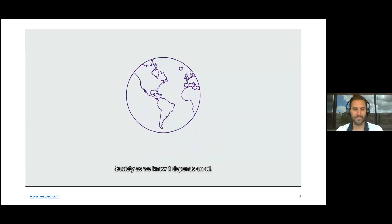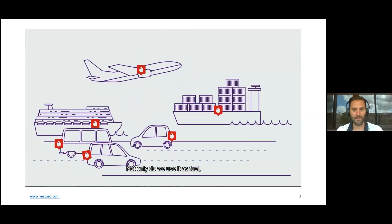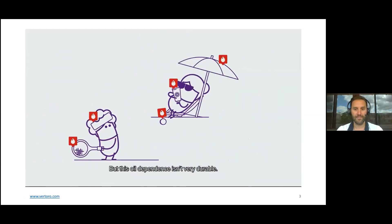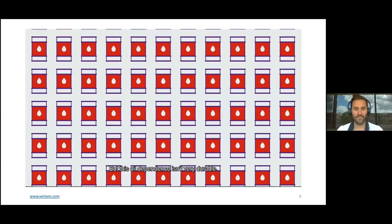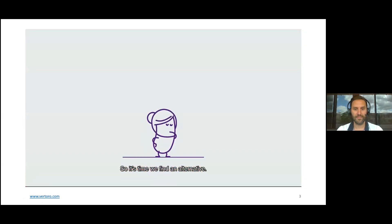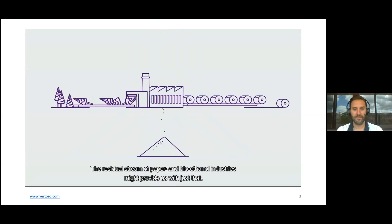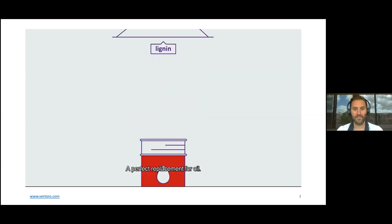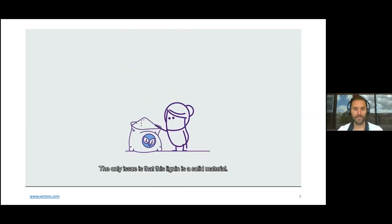Society as we know it depends on oil. Not only do we use it as fuel, it's in almost all materials and chemicals we use. But this oil dependency isn't very durable. So it's time we find an alternative, something sustainable with similar properties that's abundantly available. The residual stream of paper and bioethanol industries might provide us with just that. Each year they burn 100 million tons of lignin, a perfect replacement for oil. The only issue is that this lignin is a solid material.